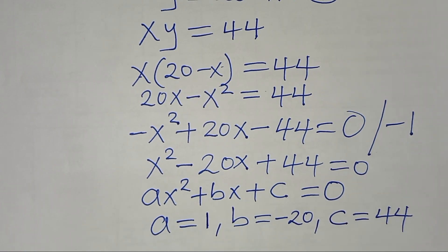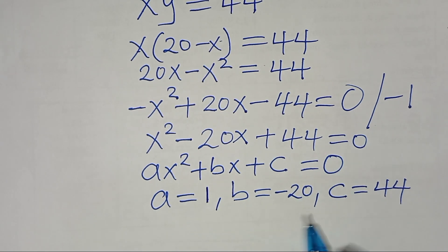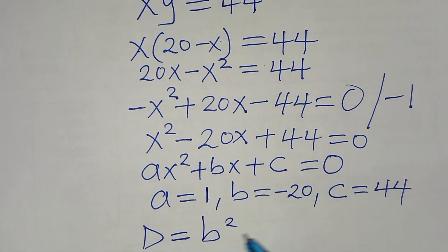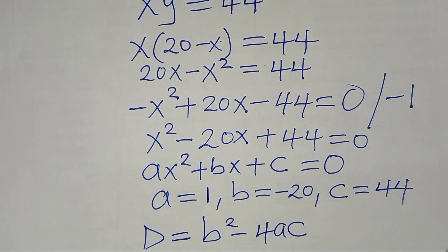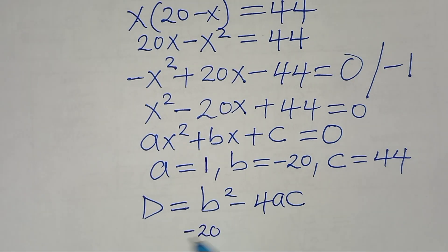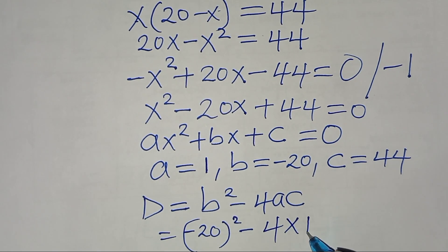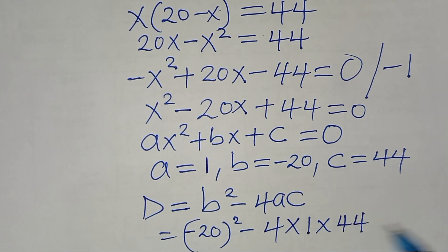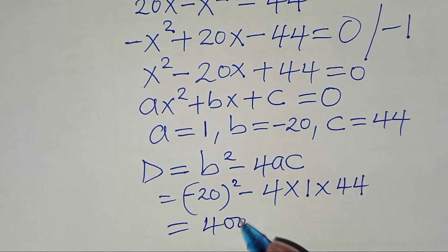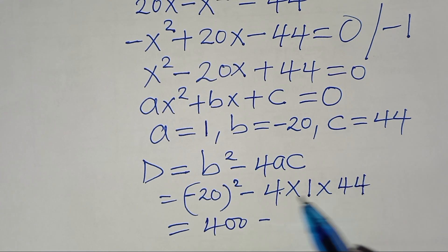We can check the nature of the roots of this quadratic by determining the discriminant, which is b squared minus 4ac. So we have negative 20 squared minus 4 times 1 times 44. That is 400 minus 4 times 44.